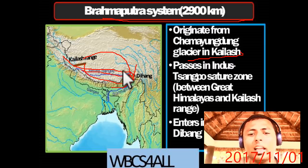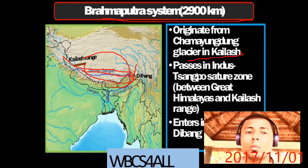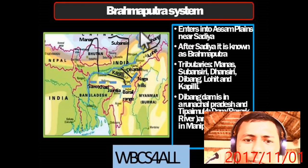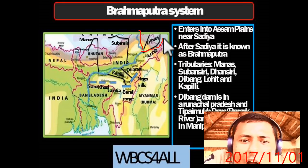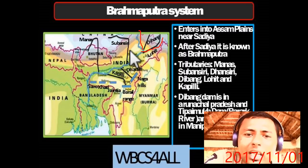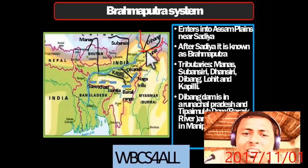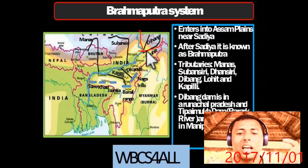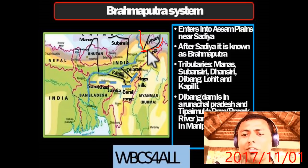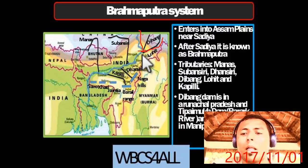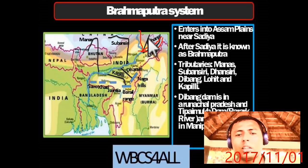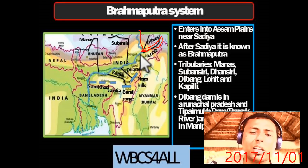At the U-turn point it is known as Dibang, not yet Brahmaputra. It merges with the Lohit river and enters into Assam near the Sadiya plain. The Vijay Hazarika bridge was made from Sadiya, Assam to Arunachal Pradesh. After Sadiya, once tributary Lohit meets, the combined flow of Dibang and Lohit is known as Brahmaputra.